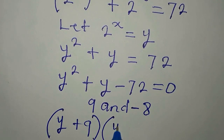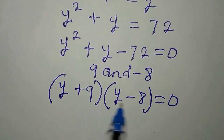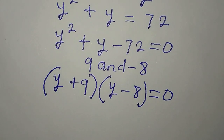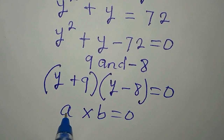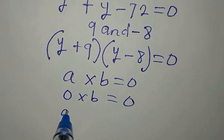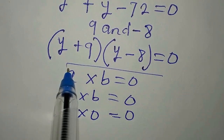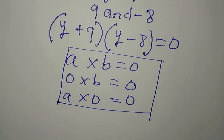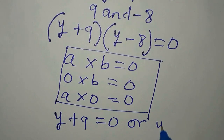So everything is set. This means that the first factor will be y plus 9, and the second factor will be y minus 8, and we equate all of this to zero. Now we obey the zero product property: if you have a times b equal to zero, it means either a is zero or b is zero, because zero times b gives zero, and a times zero also gives zero.